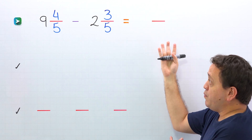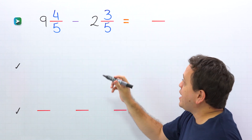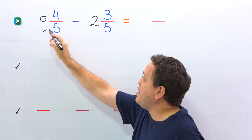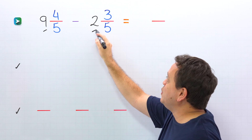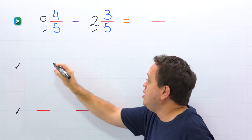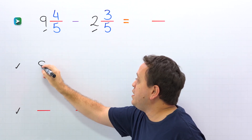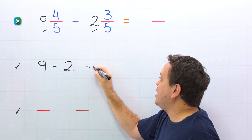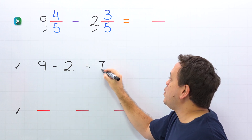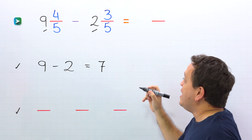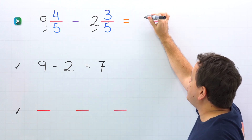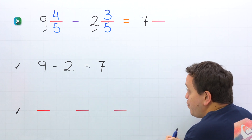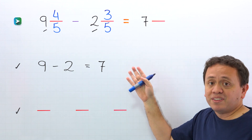To find the difference, first we need to subtract the whole numbers. The whole numbers are nine and two in this example. So we put nine minus two, and nine minus two is equal to seven. Next, we put seven in the answer. We have the difference of the whole numbers.